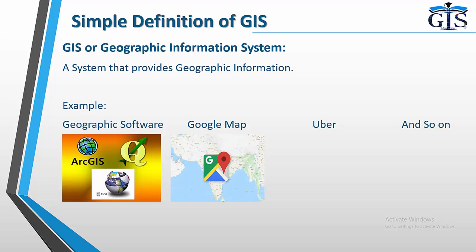Google Maps, which is known to everyone, is also an example of GIS. We use Google Maps to see location-based information. We can see the map of any country, see the state boundary, see the road name, and find an address. By using Google Maps, we can get location-based information, so this is also an example of GIS.